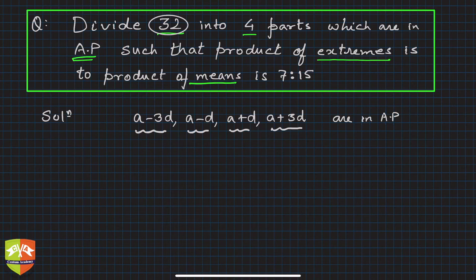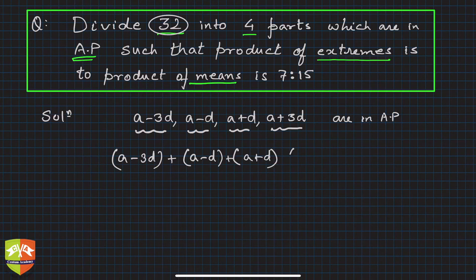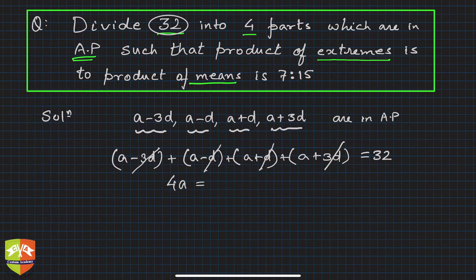Now a minus 3d, a minus d, a plus d, and a plus 3d are in AP, and their sum is 32. When you write this, minus d and plus d cancel, plus 3d and minus 3d cancel, you get 4a equals 32, hence clearly a is 8.